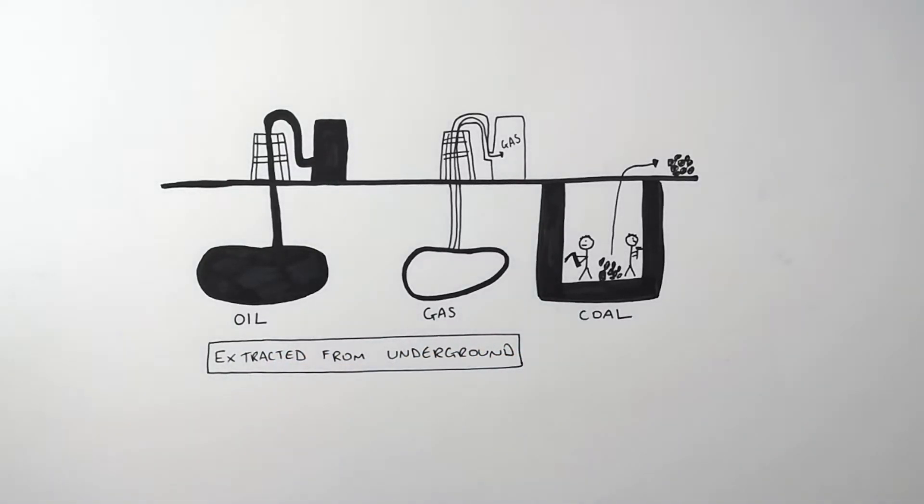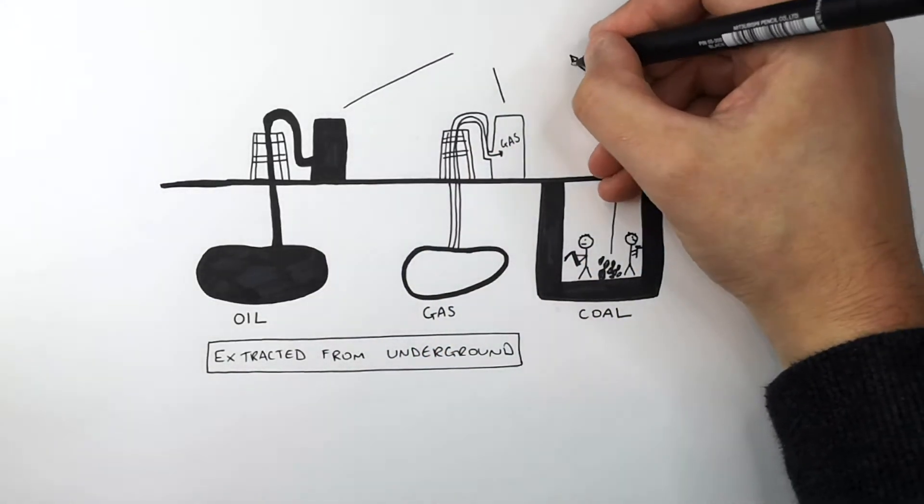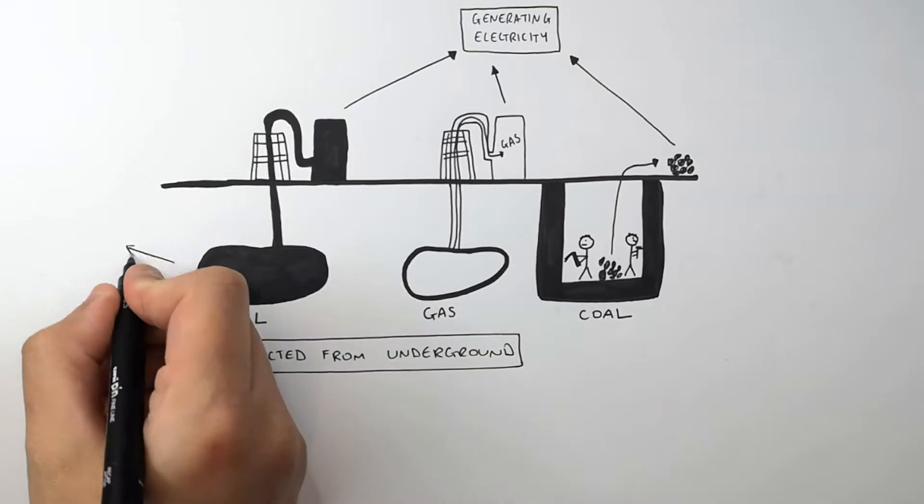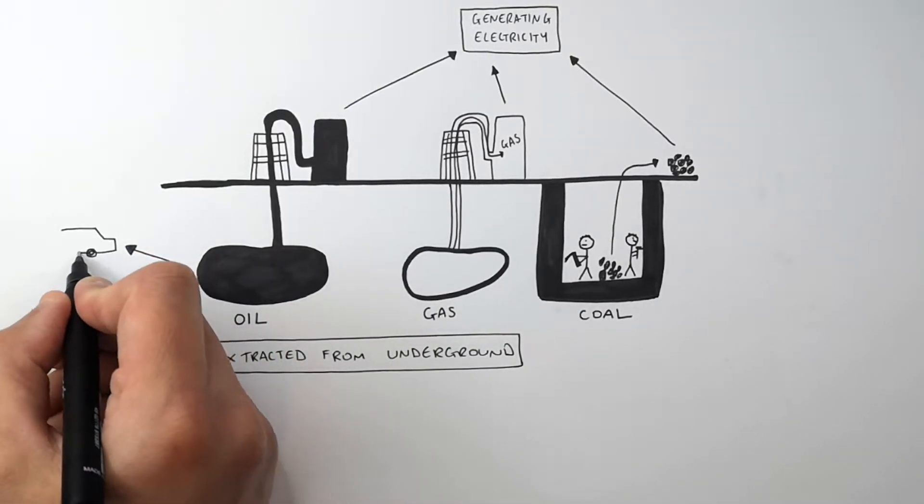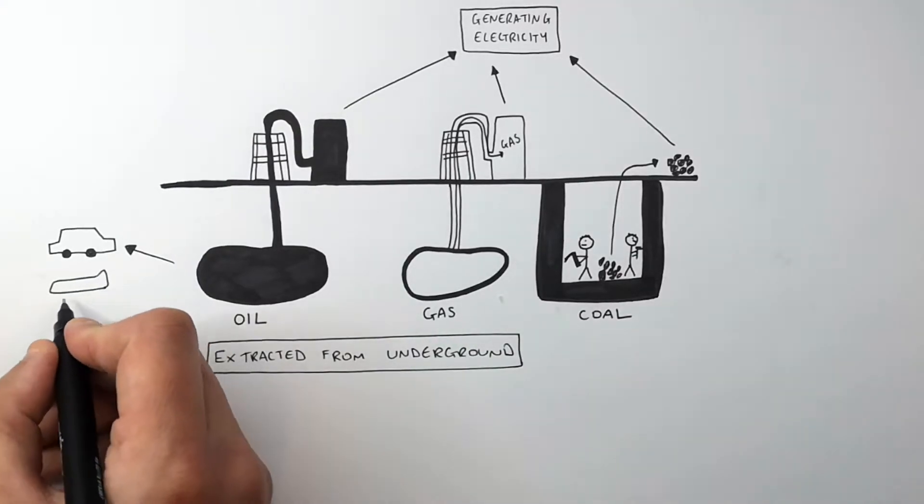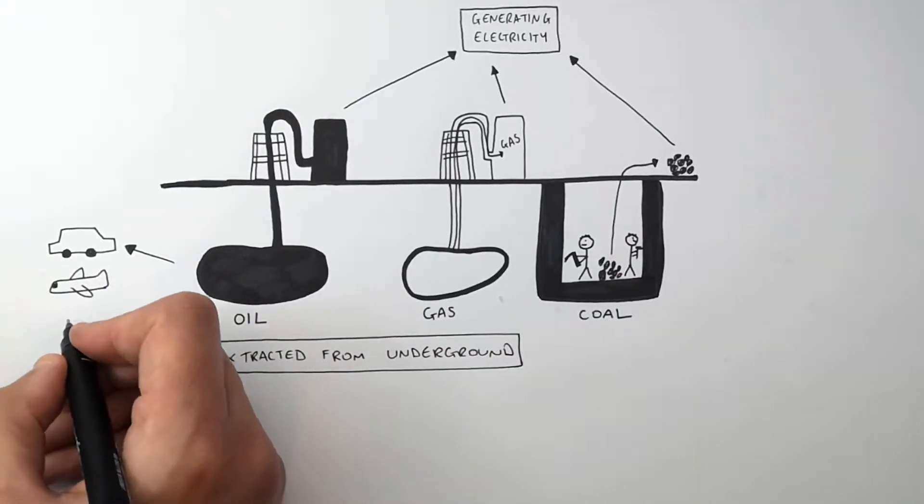So what are their general uses? Oil, gas and coal are all used in generating electricity. Oil however is also used in transport, so crude oil is refined to different types of fuels for cars, planes, motorbikes, etc.